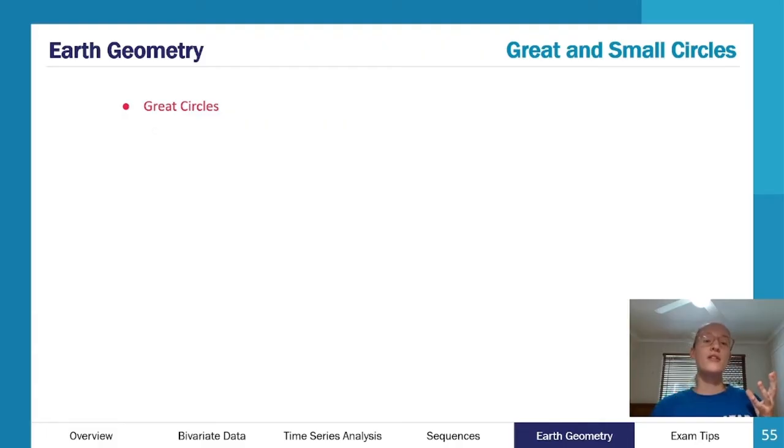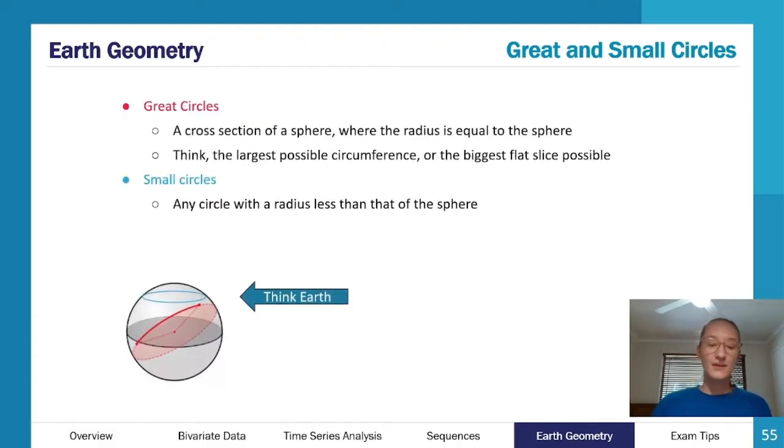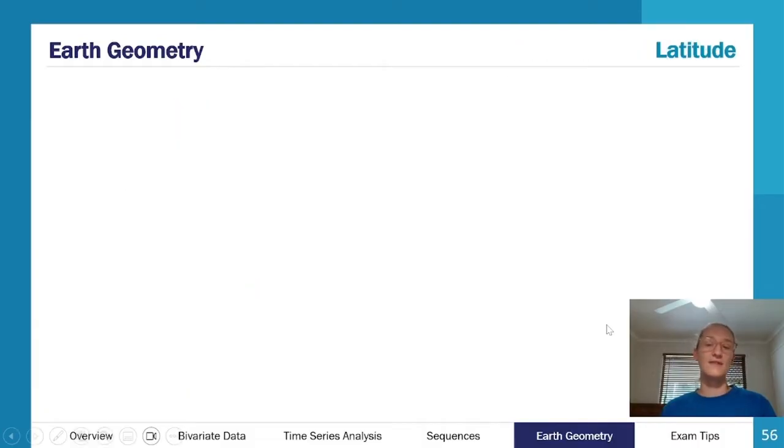So think about the earth, roughly a sphere. In the earth, we can have great circles and small circles. Just terminology wise, great circles are a cross section where the radius is equal to that of the sphere, so pretty much the largest flat slice possible. Whereas small circles are any circle with a radius less than that of the sphere.